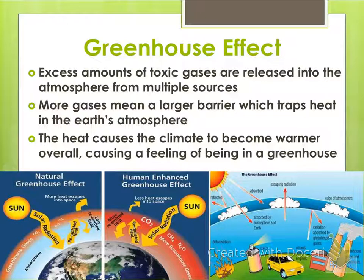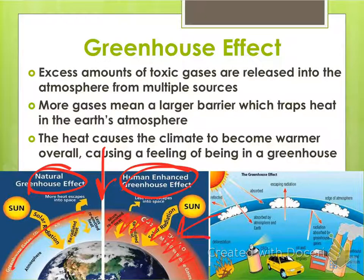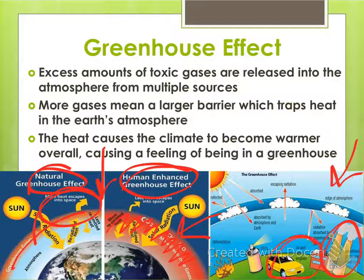So the greenhouse effect is basically when the planet is made to feel more like a greenhouse — more and more gases are being released into the air. If you look at this picture, it shows natural versus human-enhanced. The natural barrier is a lot thinner, but in the human-enhanced version, the barrier is much thicker. All the heat coming in and being radiated off the Earth isn't escaping like it's supposed to. So the overall climate of the planet is becoming warmer because of all this trapped heat. Examples of contributors include fossil fuels, engines, CFCs from aerosol cans, and deforestation through burning — all releasing gases that make the environment warmer.